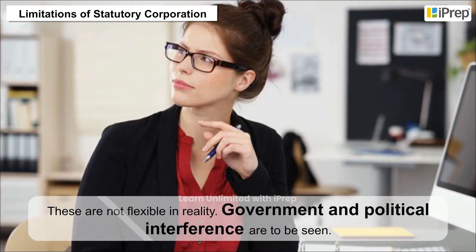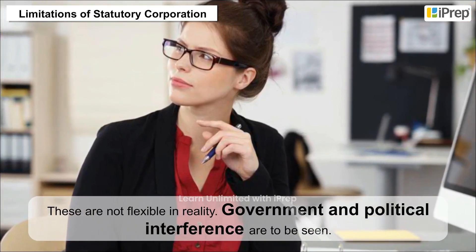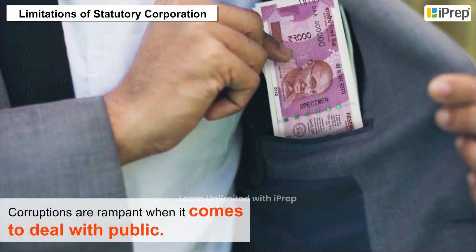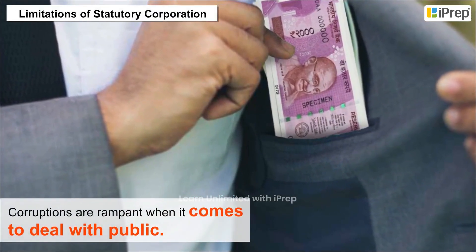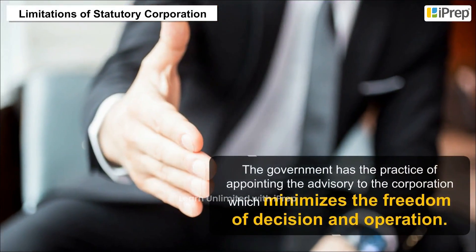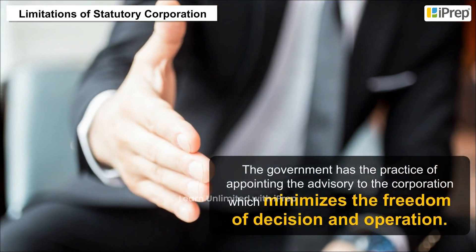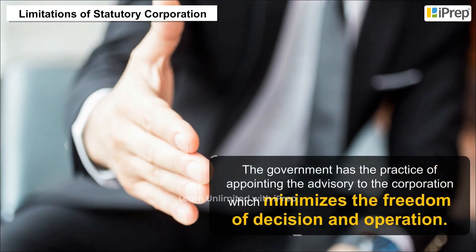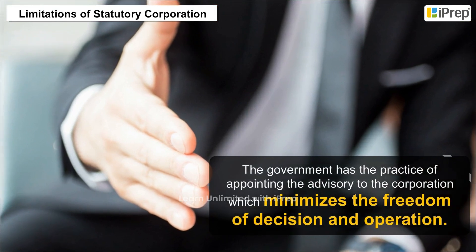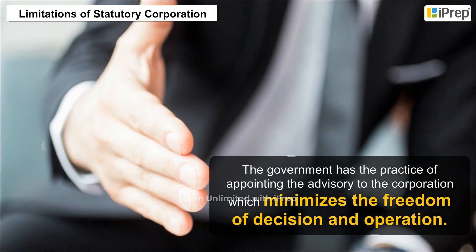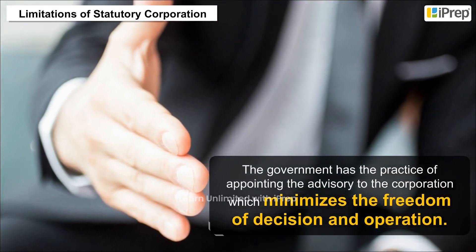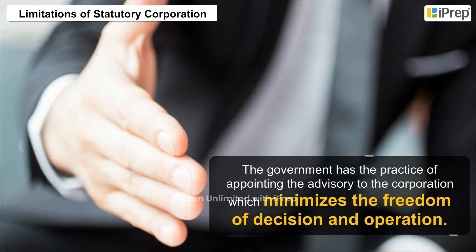Limitations of statutory corporations: they are not flexible in reality. Government and political interference are commonly seen, and corruption is rampant when dealing with the public. The government has the practice of appointing advisories to the corporation, which minimizes the freedom of decision and operation.